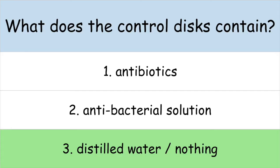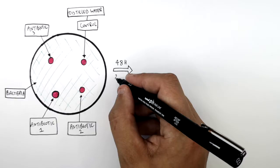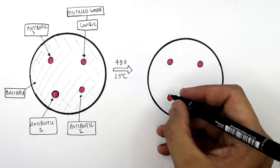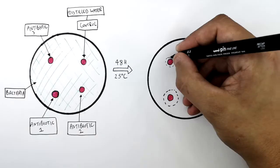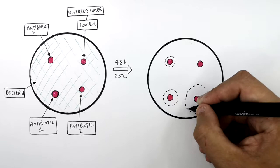We then incubate the bacteria on the agar plate for 48 hours at 25 degrees Celsius and we should see zones where there are no bacteria growing. What I'm drawing here is the zone of inhibition — the area where no bacteria grow. Antibiotic 3 has a smaller zone of inhibition than antibiotic 1, and antibiotic 2 has the largest zone of inhibition.